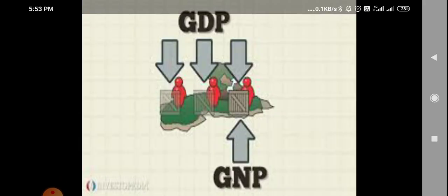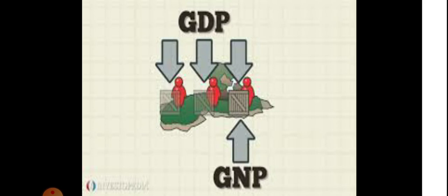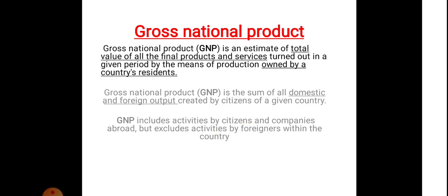First of all, I want to focus on GDP and GNP. GDP stands for Gross Domestic Product — this can be a direct optional question. GNP stands for Gross National Product. The full forms can be asked directly. What are the main differences between Gross National Product and Gross Domestic Product? What are the definitions and how can they be calculated?